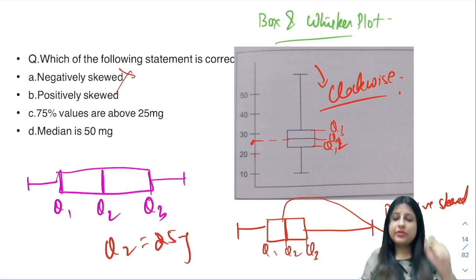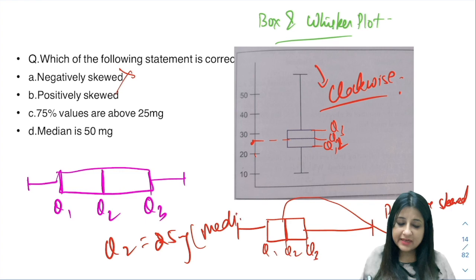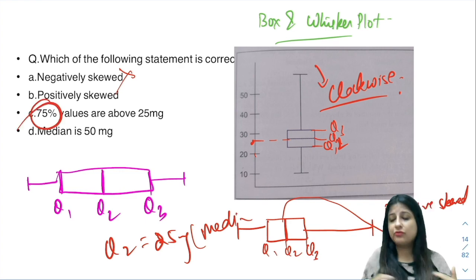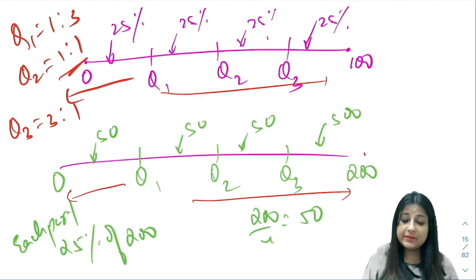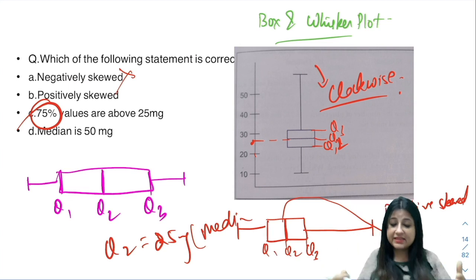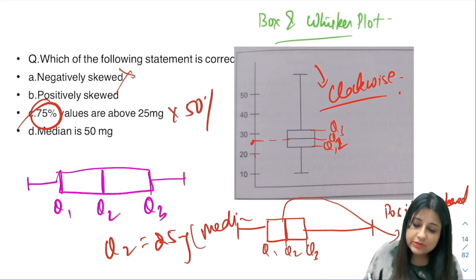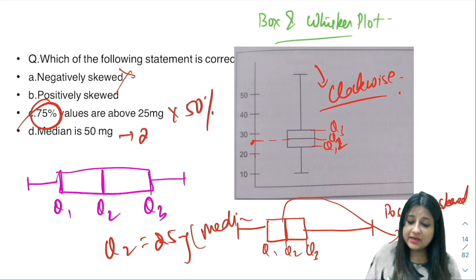Above median will we have 75% value? No, you just did it. Q2 means one is to one, that means 50% value is above and median is roughly coming towards 25 mg.